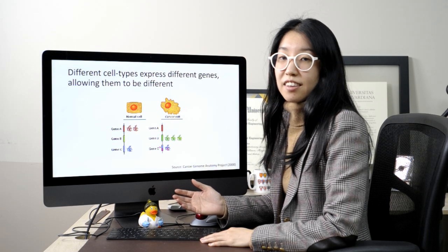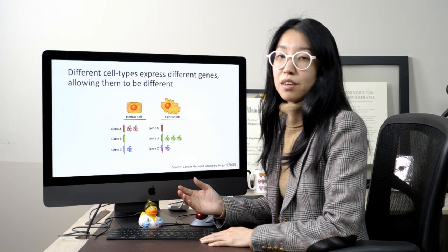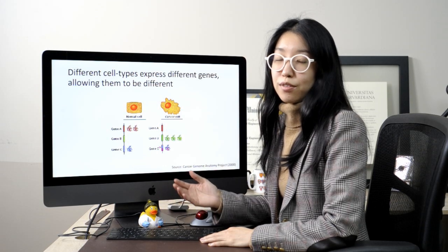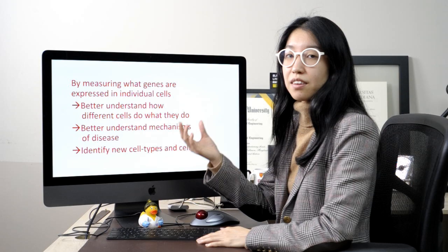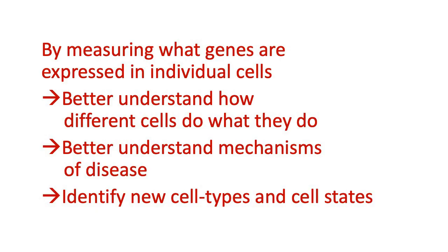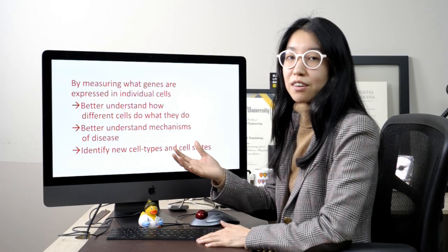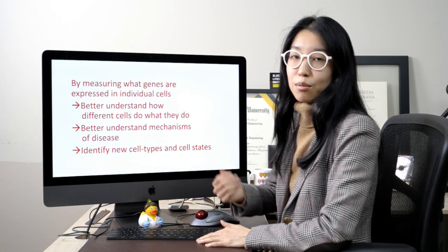Likewise, aberrations in the underlying regulatory mechanisms that control these coordinated patterns of gene expression may result in the aberrant over-expression of certain genes, which ultimately manifest in diseases such as cancer. So by measuring what genes are expressed in individual cells, we may better understand the molecular underpinnings that differentiate cell types, and what are the potential mechanisms driving different diseases. We can even use these coordinated patterns of gene expression to identify potentially new cell types and cell states in the human body.